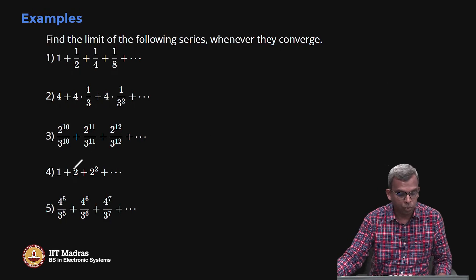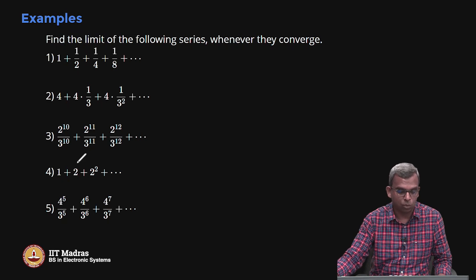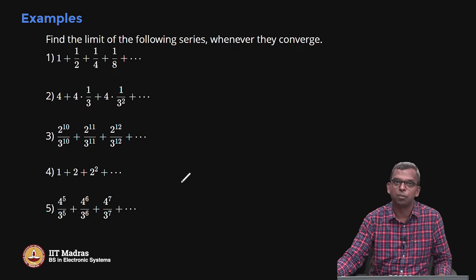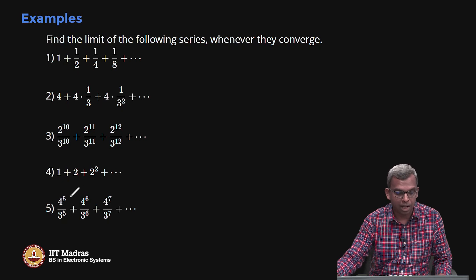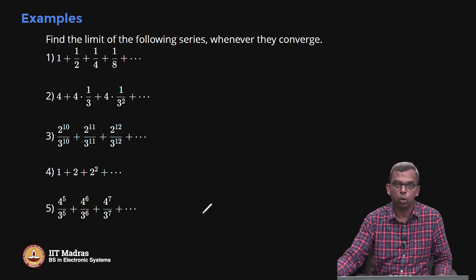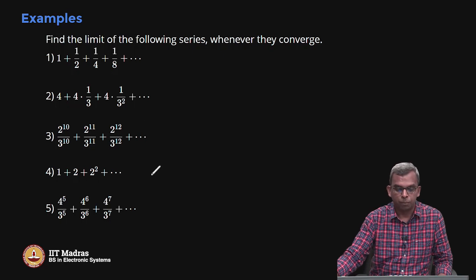The next question is 1 + 2 + 2² + ... — again geometric, but the common ratio is greater than 1, so this diverges to infinity. Similarly, 4^5/3^5 + ... is geometric with common ratio 4/3 > 1, so this also goes off to plus infinity.